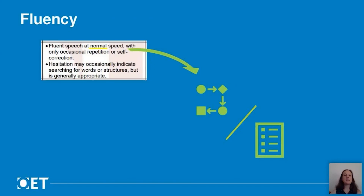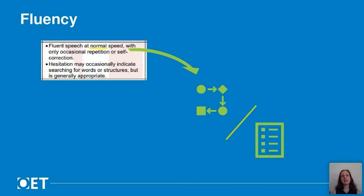For fluency, this means you are fluent at normal speed and any hesitation is due to the natural process of thinking and speaking at the same time. You may occasionally repeat yourself or self-correct, but the amount of this wouldn't confuse the patient. The words 'normal speed' are really important here because your normal speed may be different depending on what you are discussing. For example, imagine you're explaining a process or giving results of a test — would you talk about these at the same speed as when asking routine questions? No, your speed needs to be appropriate for the content.